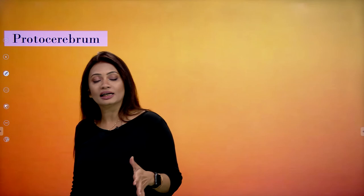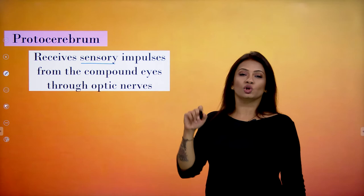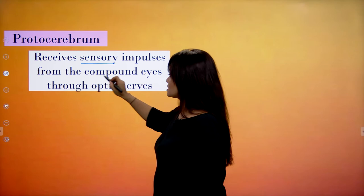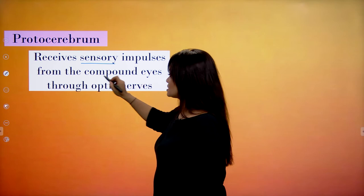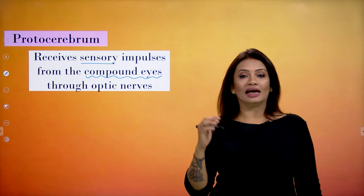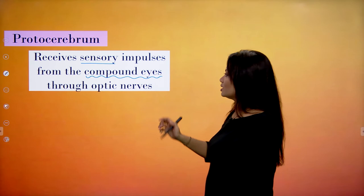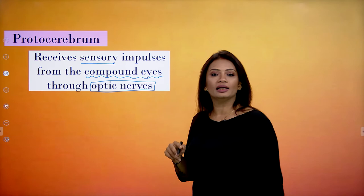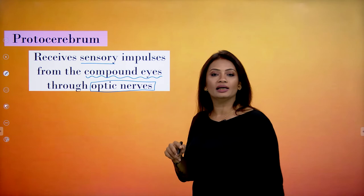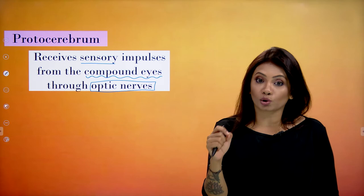The protocerebrum is going to be receiving sensory impulses from the compound eyes. The nerve that brings impulses from the compound eye to the supra-esophageal ganglion is called the optic nerve. So the protocerebrum is supplied by the optic nerve.